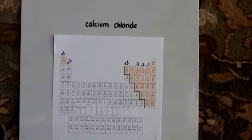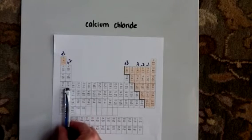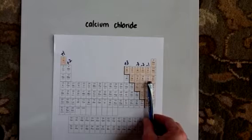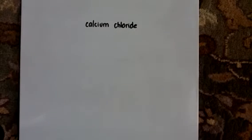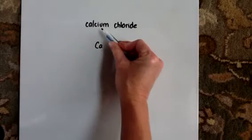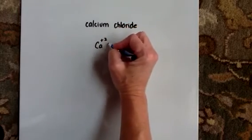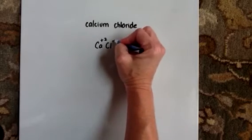The rule is when it's ionic, you look up the charges. So calcium is in the plus 2 column. Chlorine is in the minus 1 column. We're going to write the symbols in order. It's always the metal first. Calcium with a plus 2 and chlorine with its charge of minus 1.